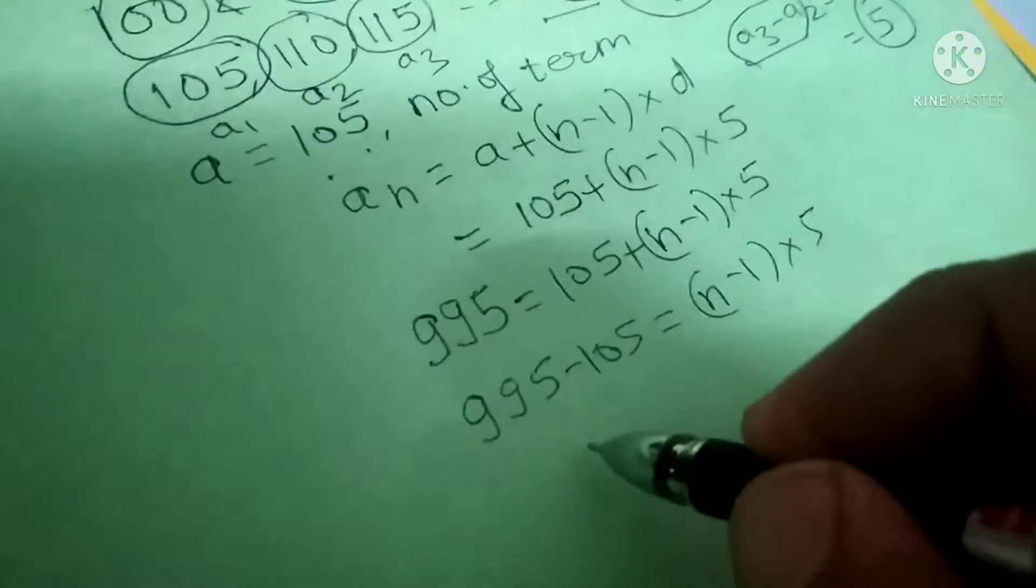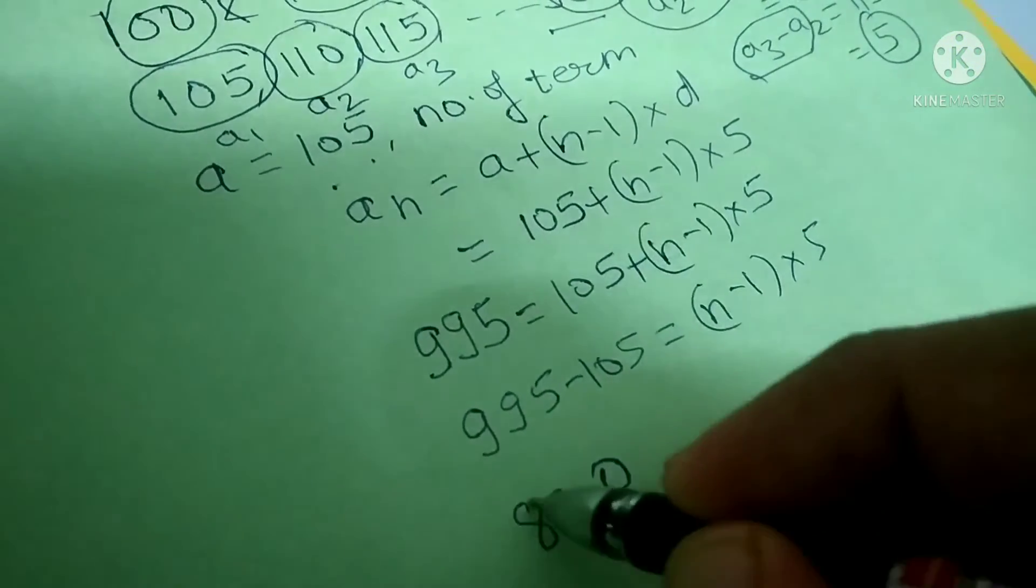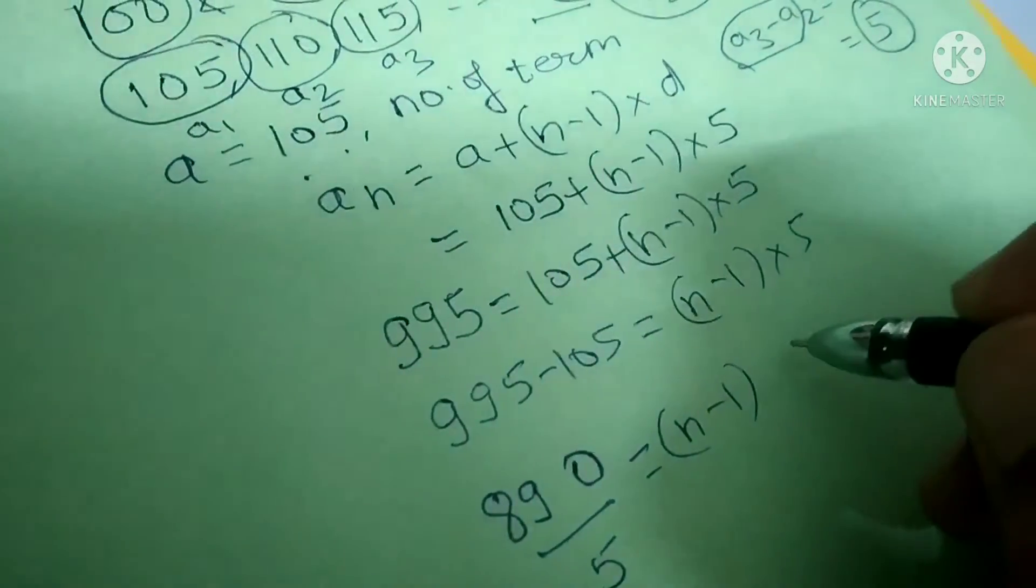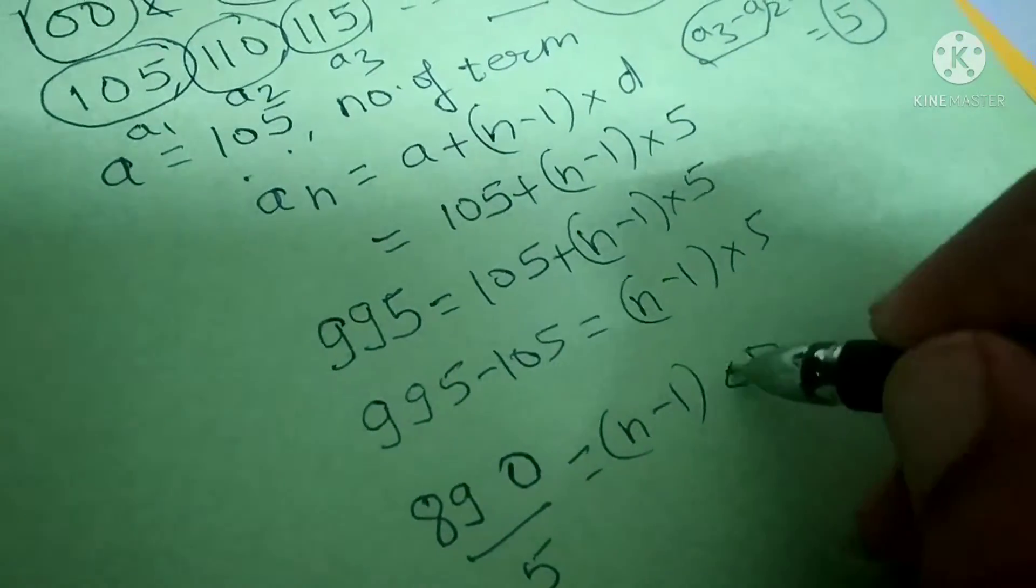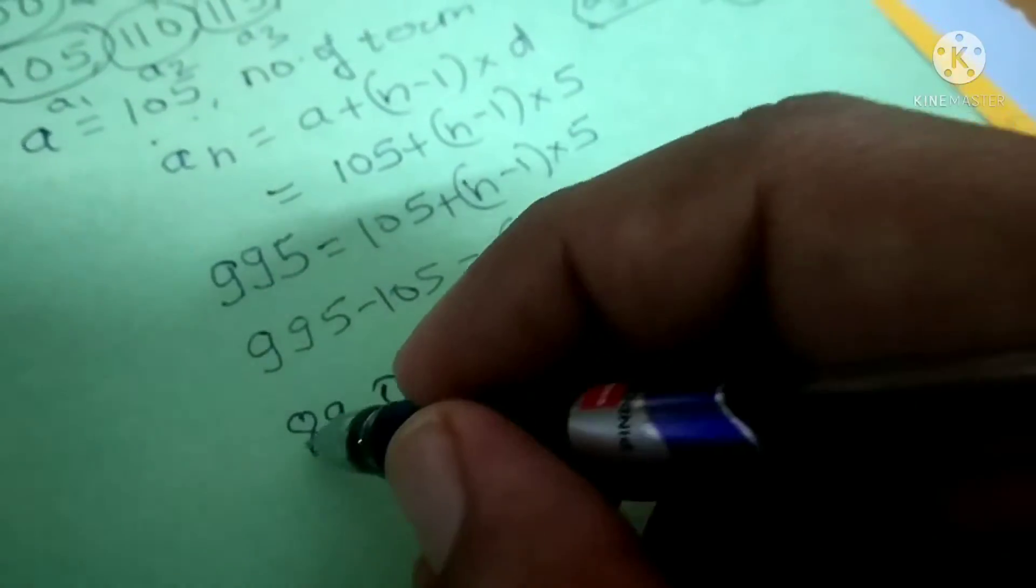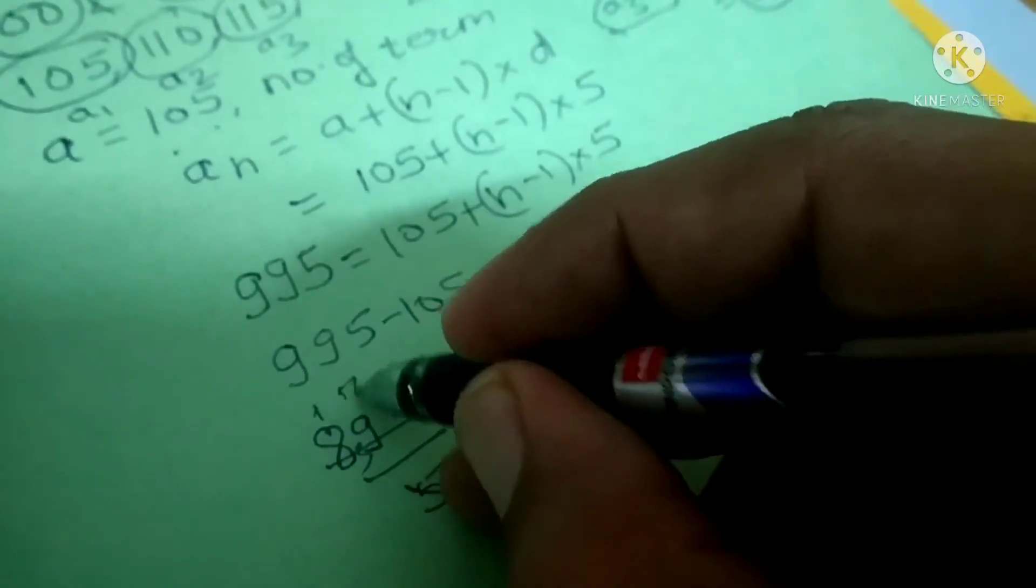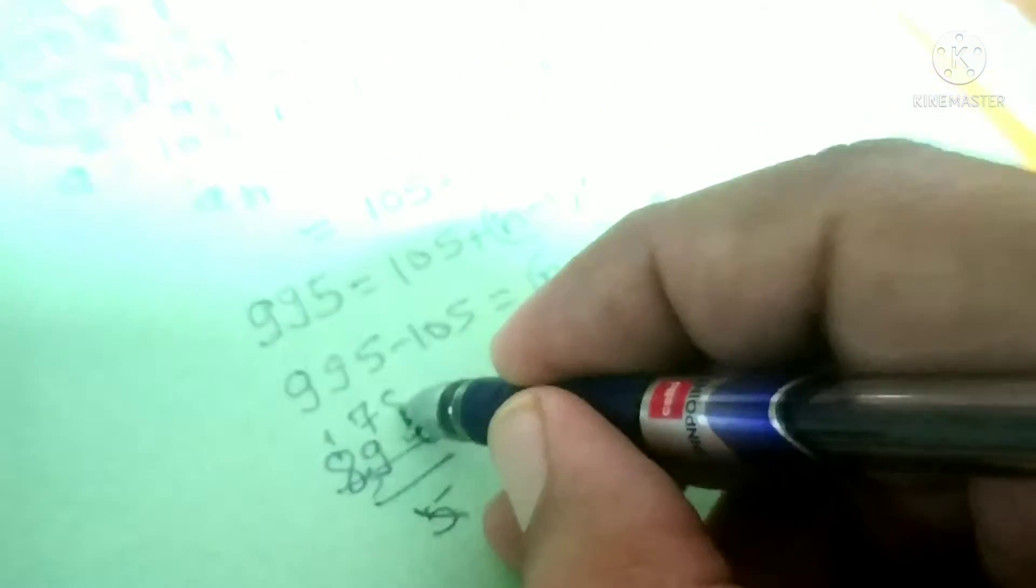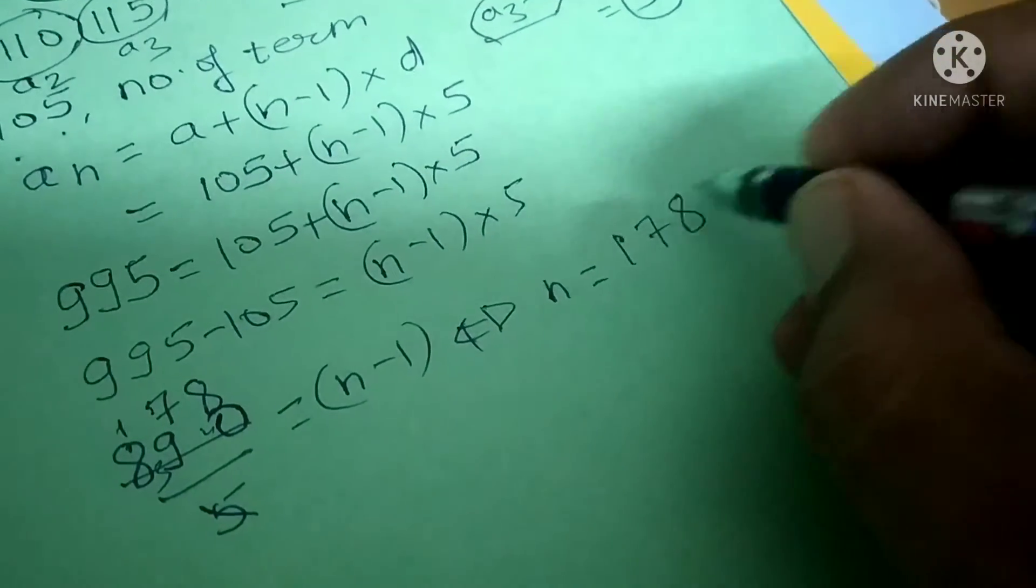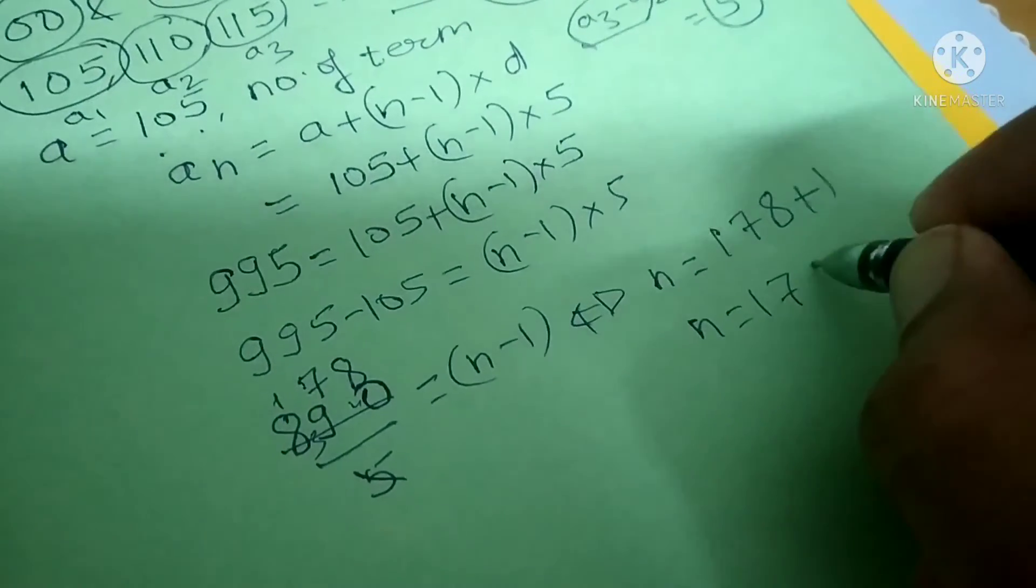So this is 890. 890 divided by 5 equals n minus 1. So n minus 1 equals 178. This implies n equals 178 plus 1, which is 179.